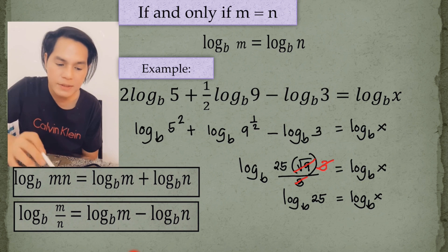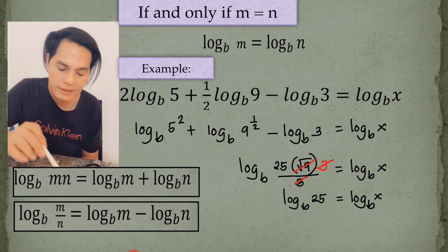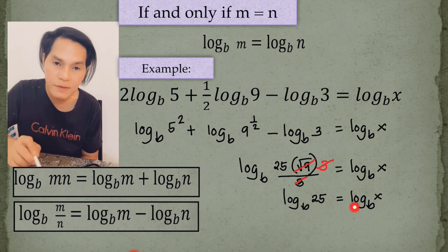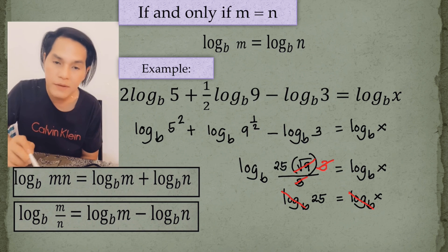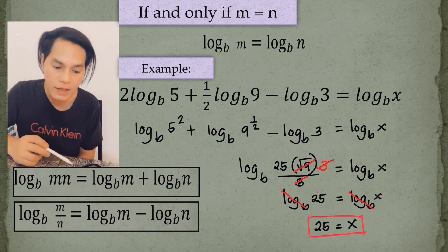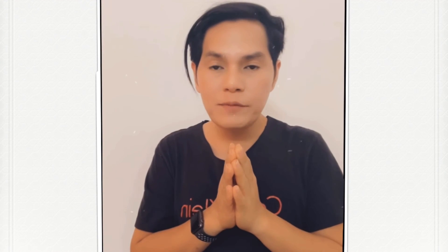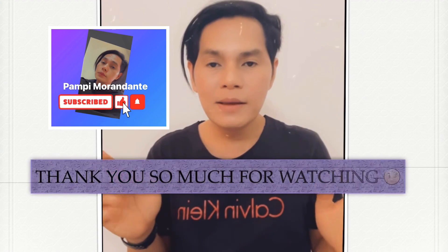As you can see from the law, we now have a single expression on both sides of the equation with the same base. We can cancel the log of the same base, and the value of x is equal to 25. That is all about this property and all about the laws of logarithms. Thank you so much for watching, and bye!